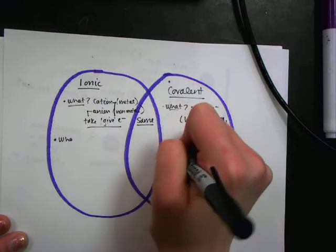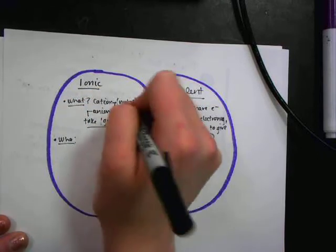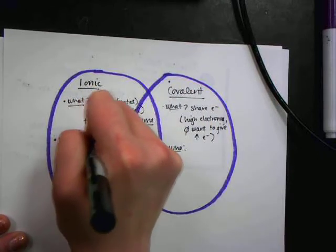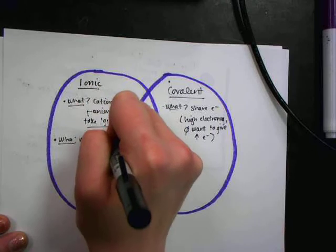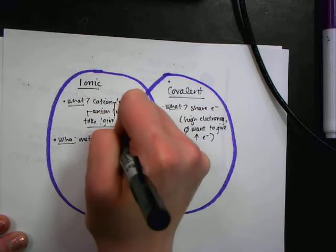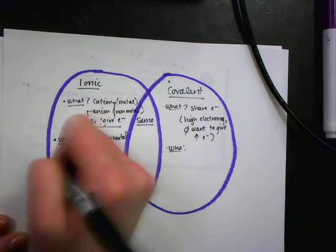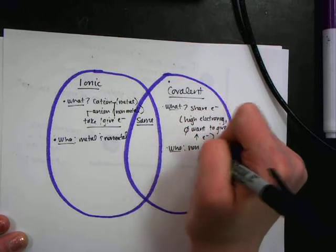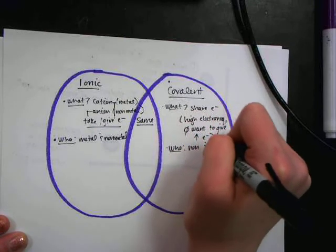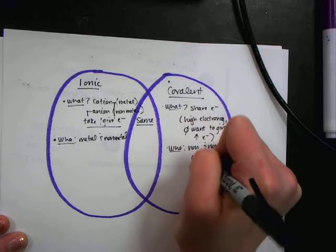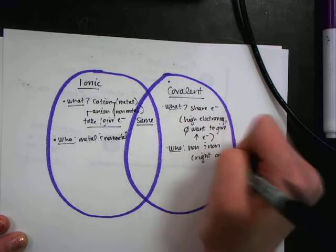Who is the next thing I want to talk about? Over here in ionic, I've said that we have a metal and a non-metal. And over here in covalent, we have a non-metal and a non-metal. So anything to the right on the periodic table.